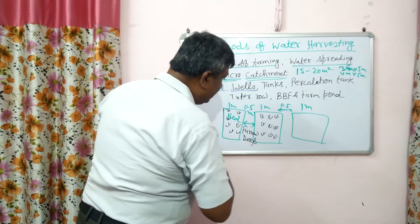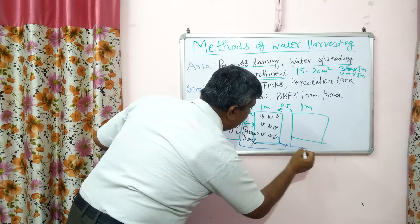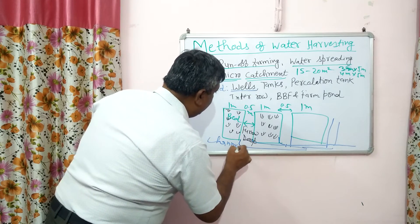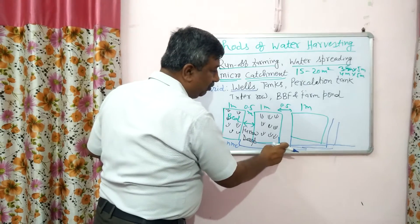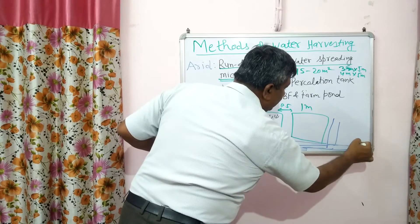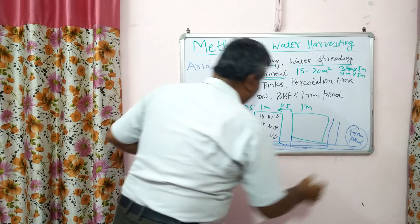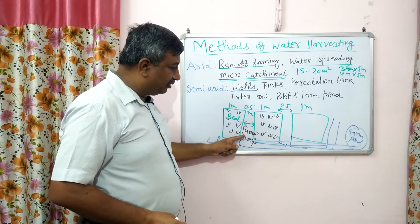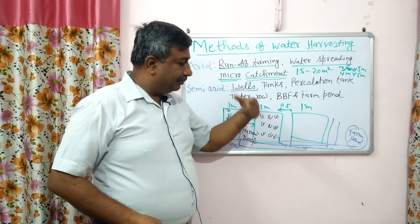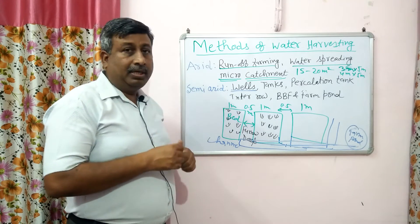When there is sufficient water, the furrows are connected by channels. All furrows are connected by a long channel, which delivers excess water to a farm pond. Water is stored in the farm pond and can be used for irrigation or any other purpose. This is the broad bed furrow and farm pond system — a very good method of water harvesting.